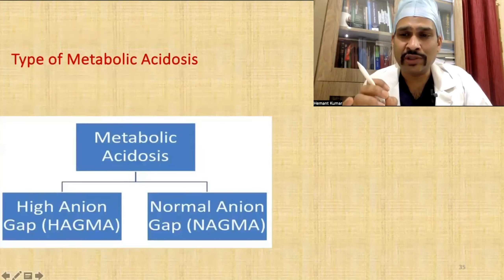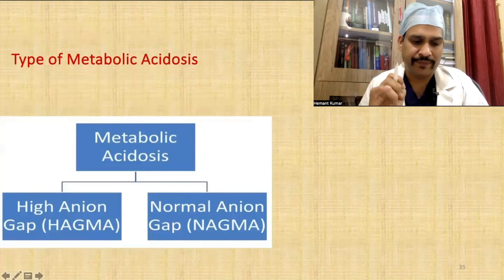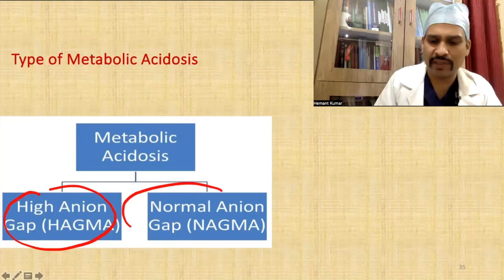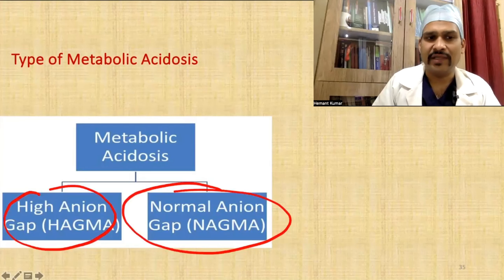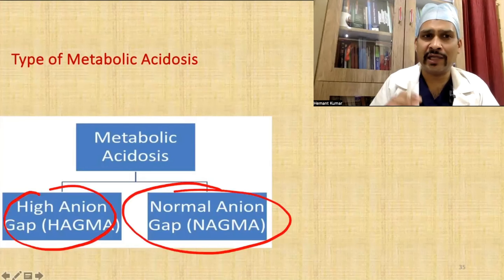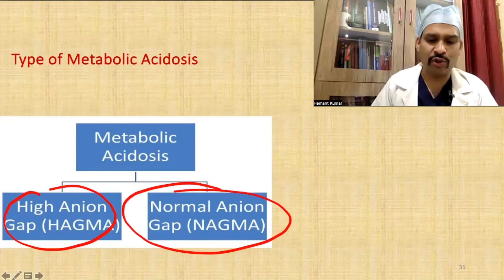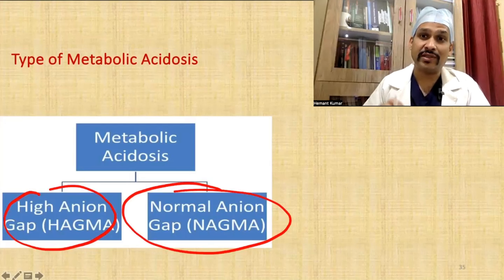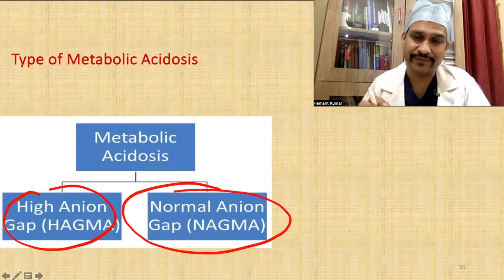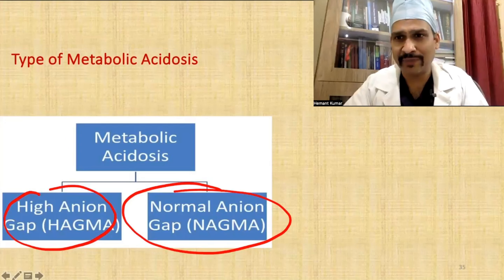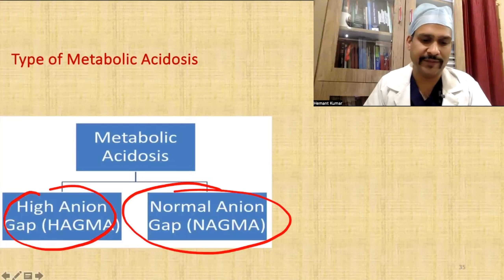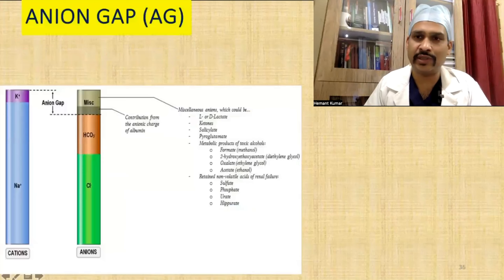Metabolic acidosis is of two types: one is high anion gap, also called HAGMA, and the other is normal anion gap, also called NAGMA. These are abbreviations I will use frequently in subsequent slides.